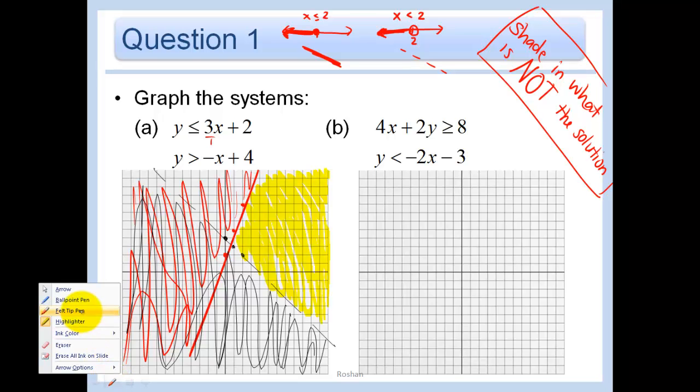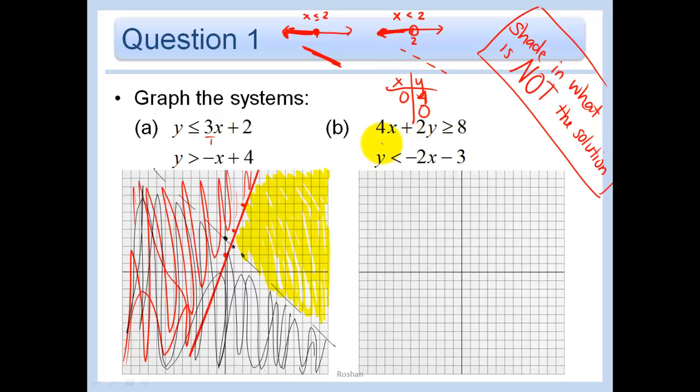Now we're going to do the next problem. And notice that this one is not in y equals mx plus b form. So we have to be a little more careful about which side we shade. It's not necessarily above for a greater than and below for a less than. It's only that when the y is by itself on the left side. So let's graph this one probably by doing the x and y-intercepts. So I'm going to do the, so if x is 0, y is 4. Because we have 2y equals 8, y is 4, okay. And if y is 0, x is 2. Because we have 4x equals 8, x equals 2, okay.